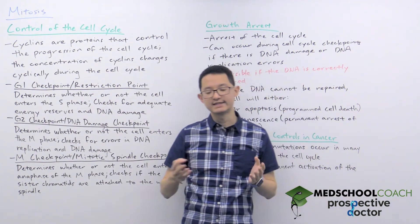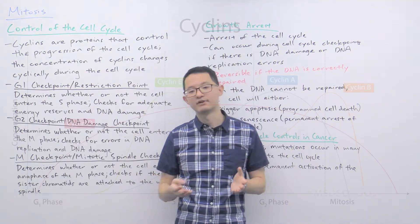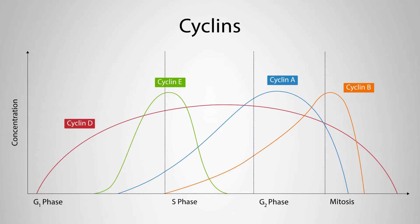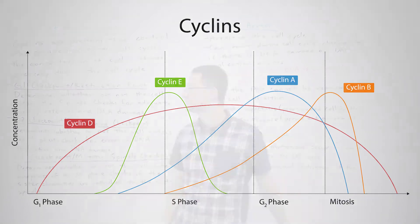As you can see in this diagram, there are a number of different cyclin proteins and each of their concentrations varies with the cell cycle.